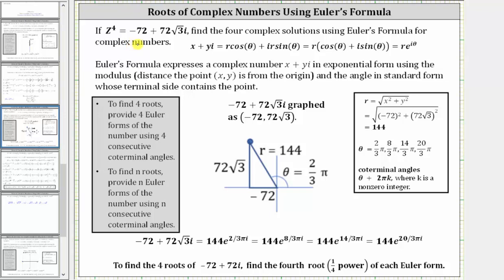If z to the fourth power is equal to negative 72 plus 72 square root three i, find the four complex solutions or complex roots using Euler's formula for complex numbers.